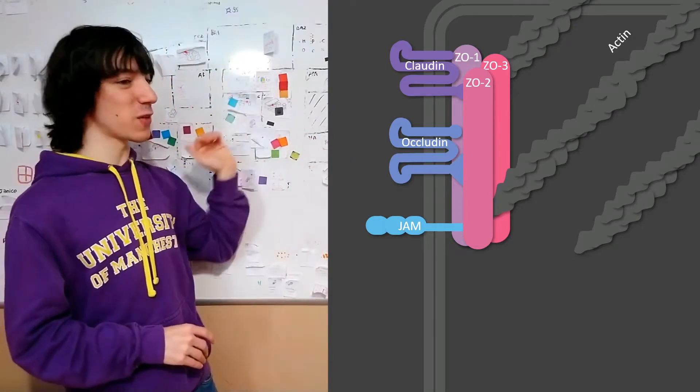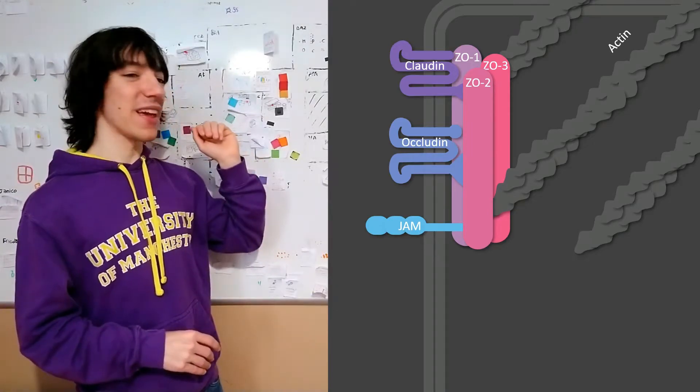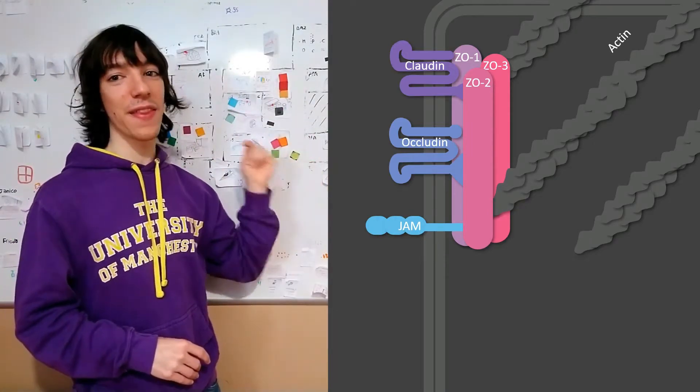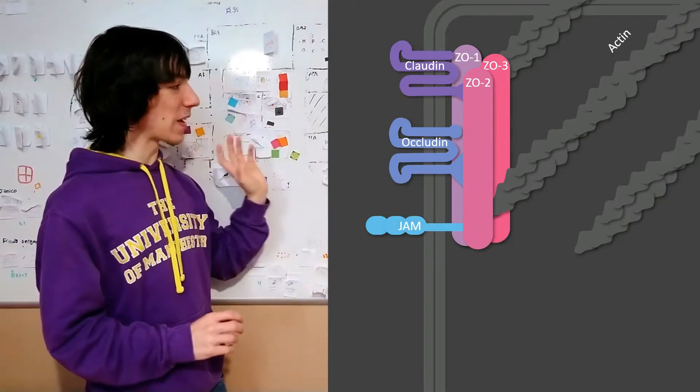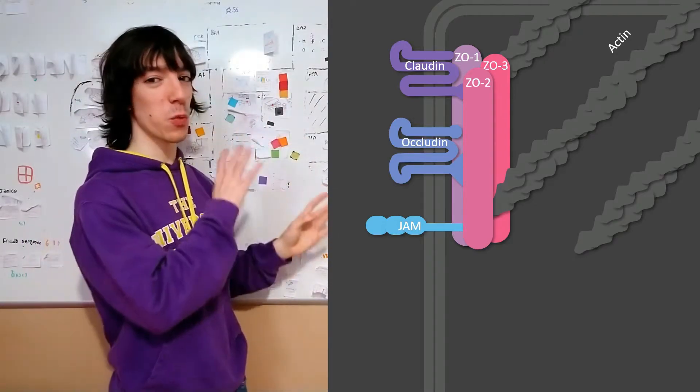These ZO proteins have a lot of binding sites. They can bind to any of the transmembrane proteins. They can bind to one another and they can also bind to actin microfilaments. I hope I have been able to capture that idea with the drawing.